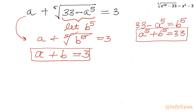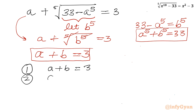So we now have a system of equations: Equation 1 is a plus b equal to 3, and Equation 2 is a to the power 5 plus b to the power 5 equal to 33. Let us solve.